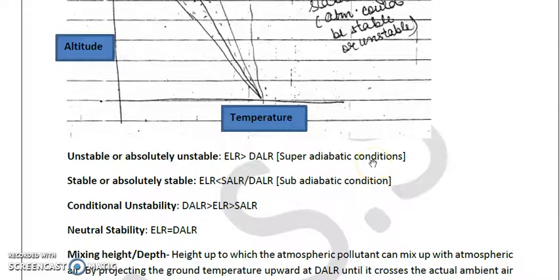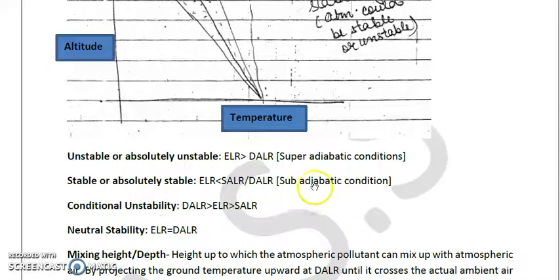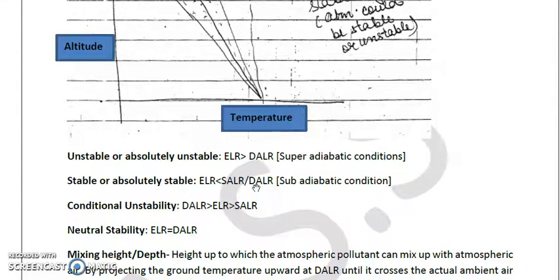When the environmental lapse rate is less than the dry adiabatic lapse rate, the environment is called stable. Stable conditions are generally observed in early morning and late night, which are also the times when temperature inversion typically occurs. Inversion is of three types: temperature inversion, radiation inversion, and subsidence inversion. The stable condition is also called sub-adiabatic, because the ELR remains less than the DALR.